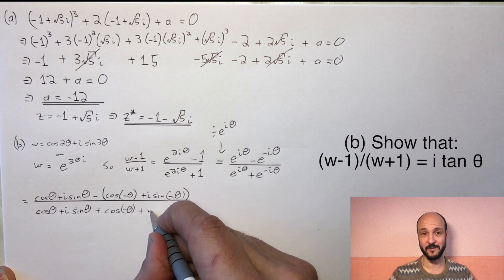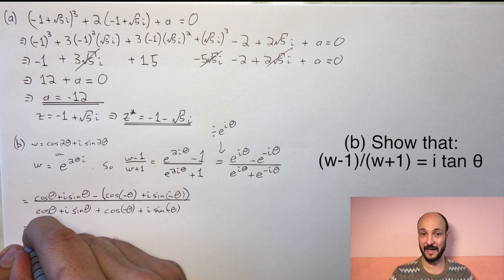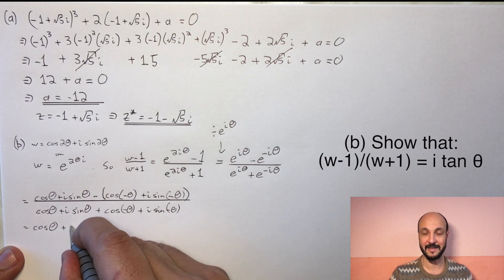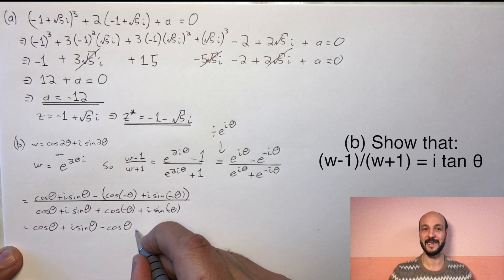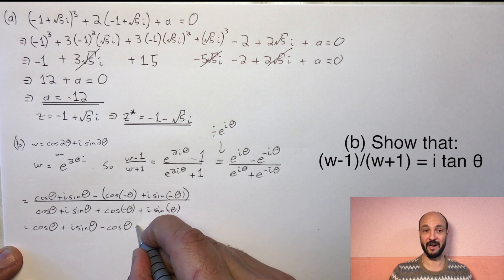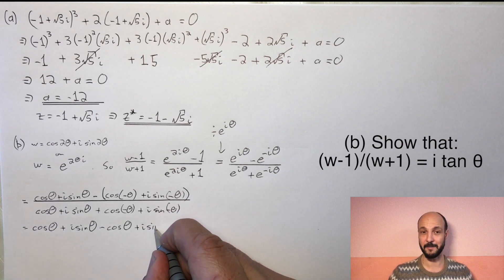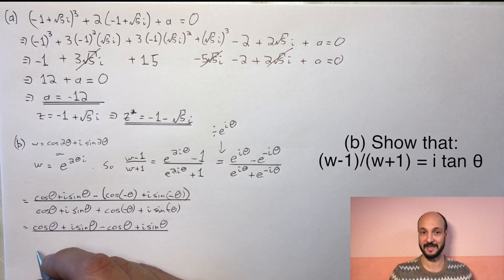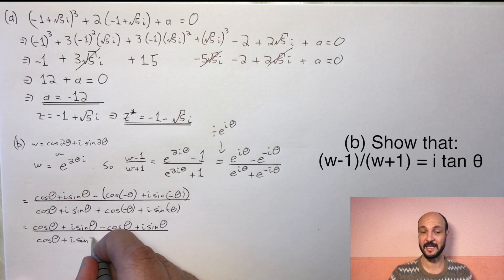Now to get rid of our minus thetas, we can use the fact that cosine function is even and the sine function is odd. So all of our cos(-θ) become cos θ and all of our sin(-θ) become -sin θ. So we can rewrite that as (cos θ + i sin θ - cos θ + i sin θ) over (cos θ + i sin θ + cos θ - i sin θ).